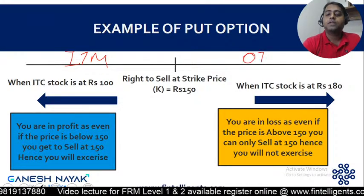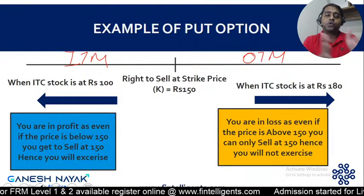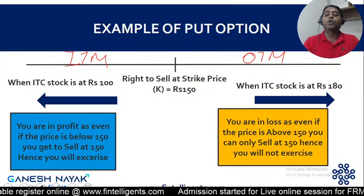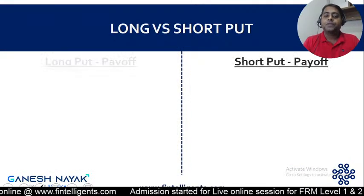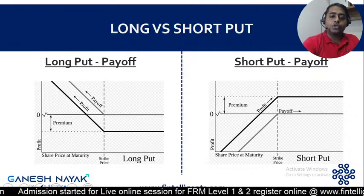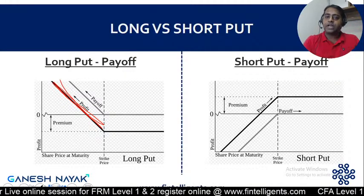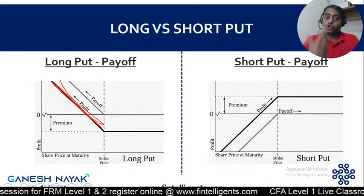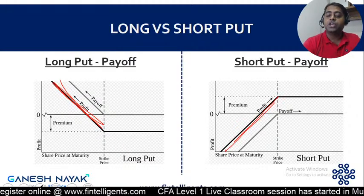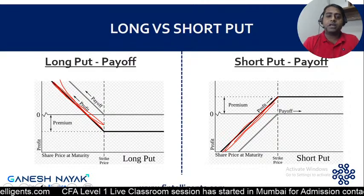For a put option, the profit region is when the stock price is below the strike price. The out-of-the-money region is when the underlying asset price goes up. In the long put position, the profit line goes up as the stock price goes down. In the short put position, you will lose money when the underlying asset goes down.